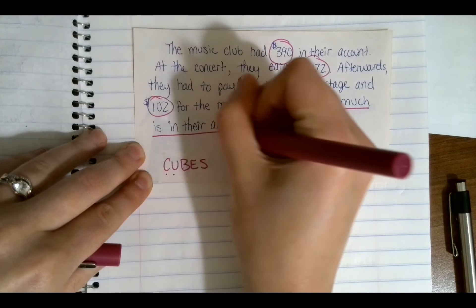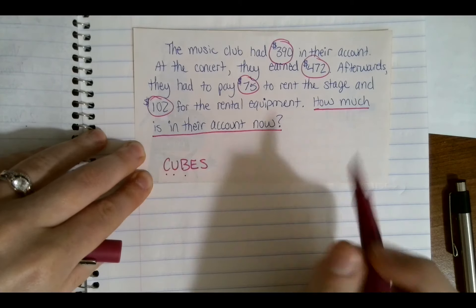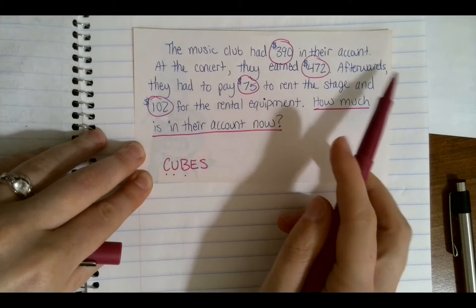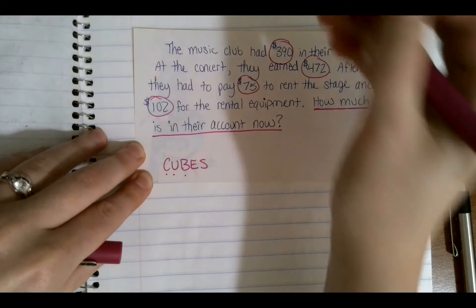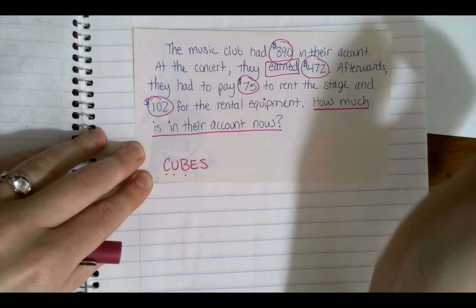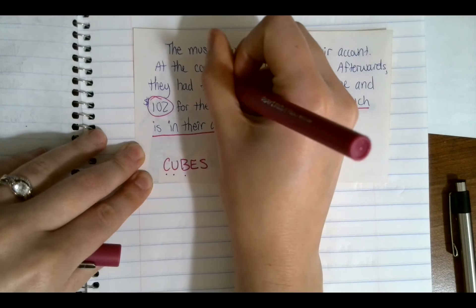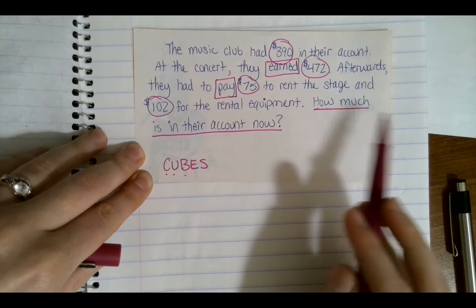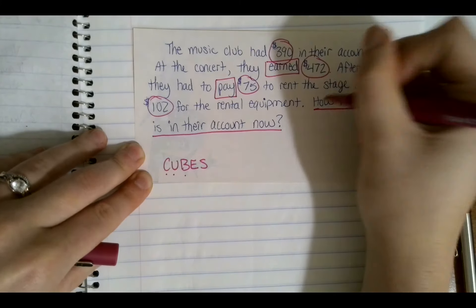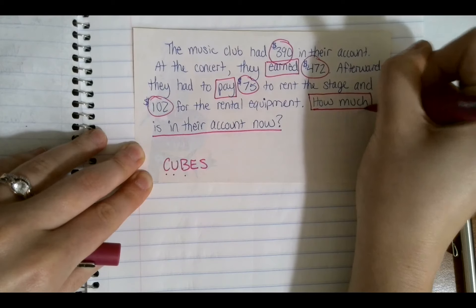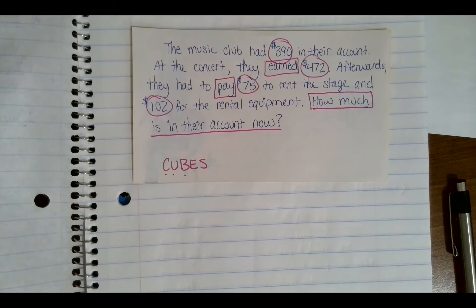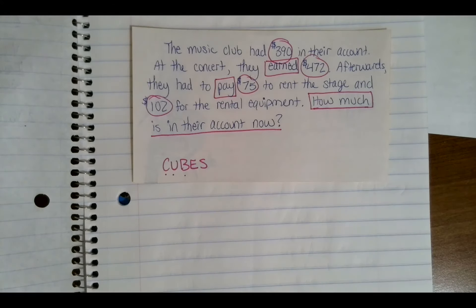Box my keywords: the music club 'had' $390 in their account; at the concert they 'earned' — that's a word we could add to our addition list; 'afterwards they had to pay' to rent the stage 'and' for the rental equipment; and 'now' we're looking for how much. Now I need to evaluate what I'm working with, so I'll write out an equation since that's the skill we're focusing on in this lesson.